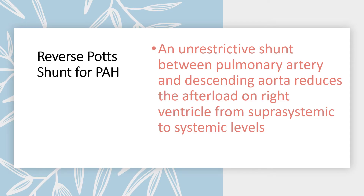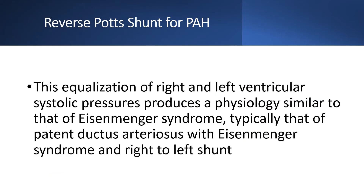An unrestrictive shunt between the pulmonary artery and descending aorta reduces the afterload on the right ventricle from suprasystemic to systemic levels. This equalization of right and left ventricular systolic pressures produces a physiology similar to that of Eisenmenger syndrome, typically that of patent ductus arteriosus with Eisenmenger syndrome and right to left shunt.